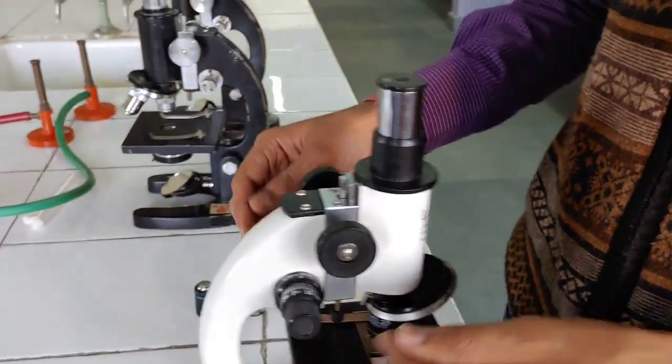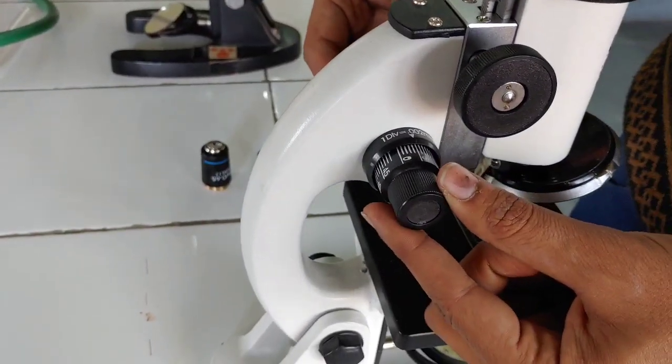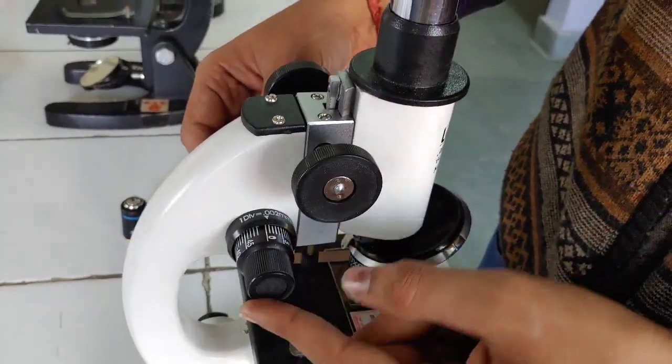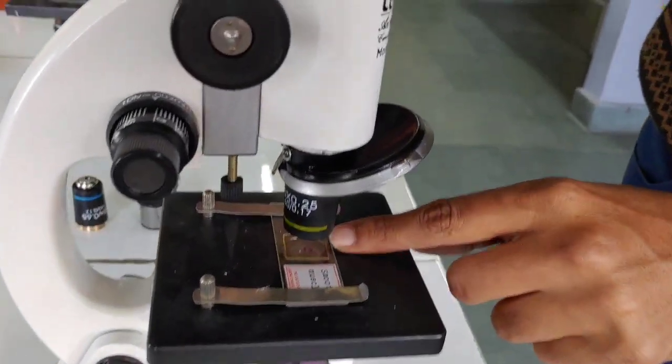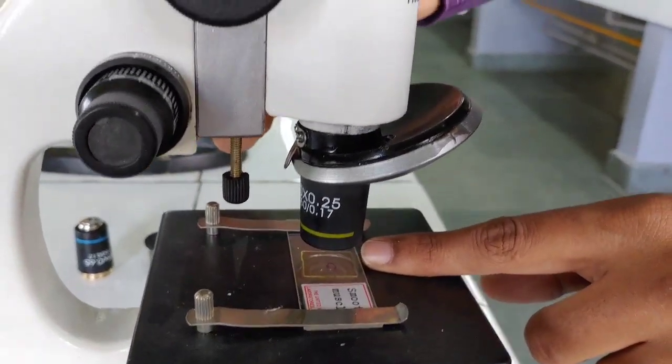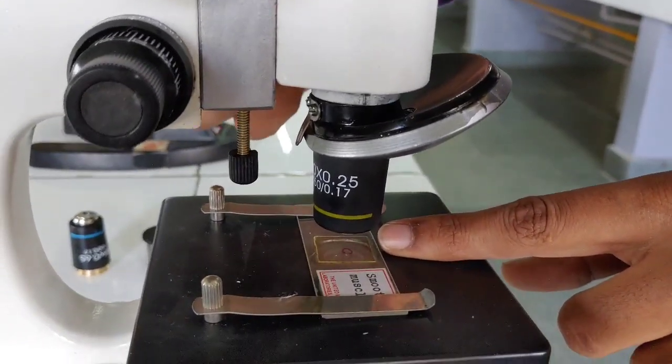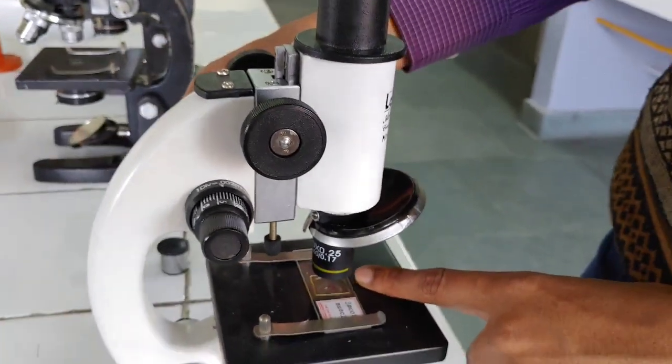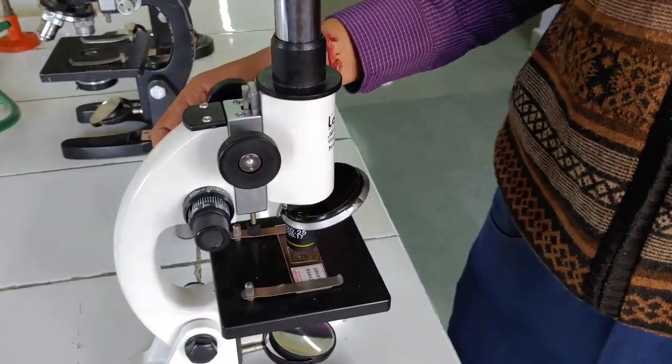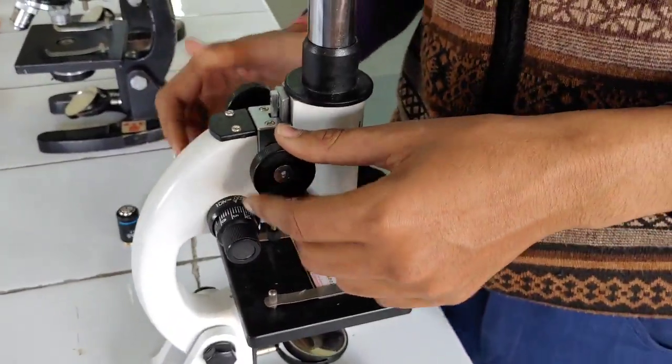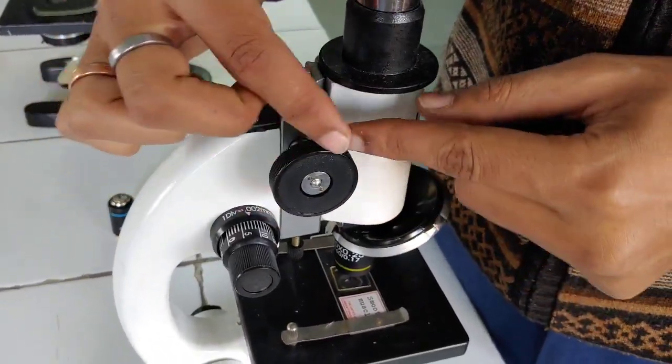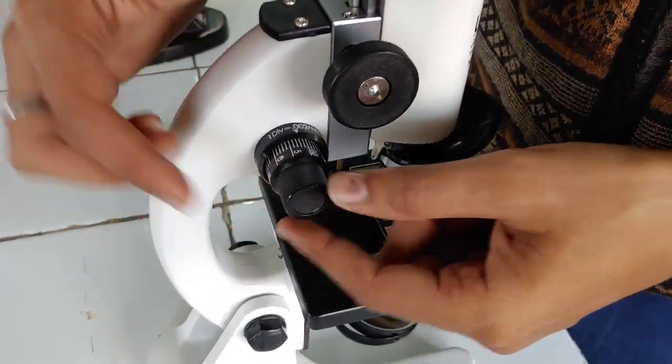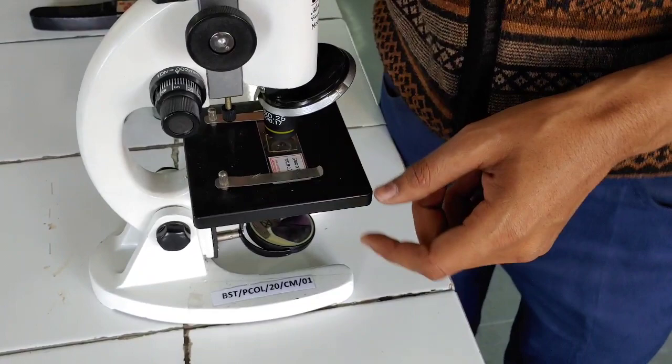Now, next is the fine adjustment knob. What is fine adjustment knob? It is used to bring the same specimen into more focused point, that is the sharp focus. So you have to adjust by yourself which one should be used first. But remember, you should first use coarse adjustment knob and then the fine adjustment knob to focus the specimen more clearly.